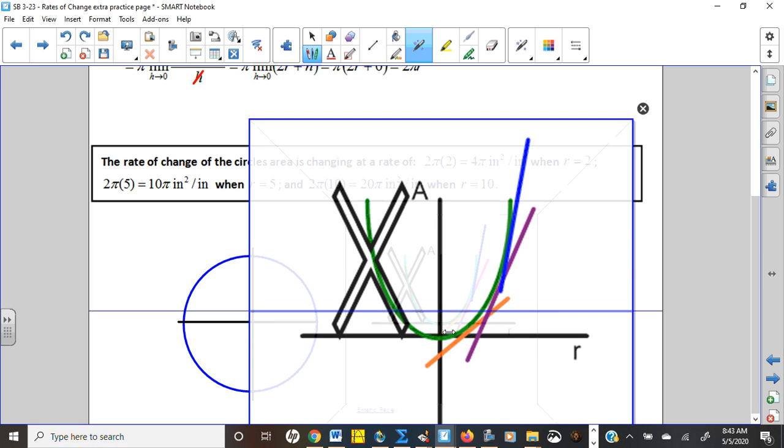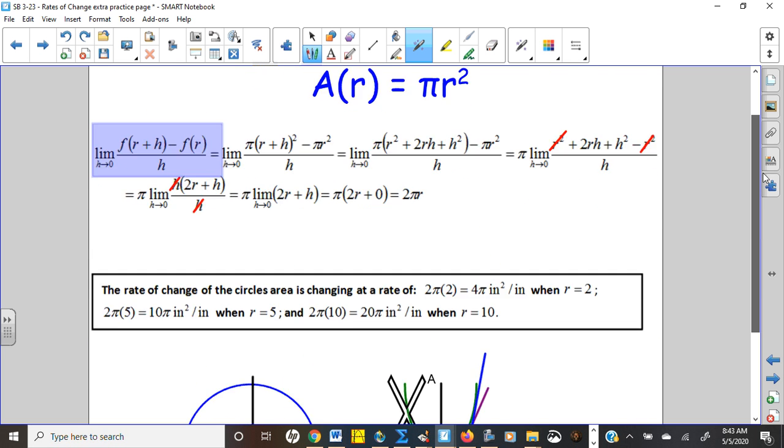And you can see that as we go further and further out, as the radius gets bigger, those tangent slopes are increasing because the area is growing faster and faster. So I just kind of estimated two, five, and ten, and you can see how the areas are changing more steeply.